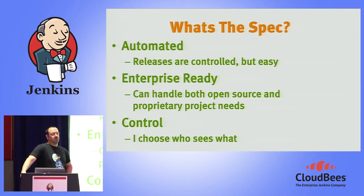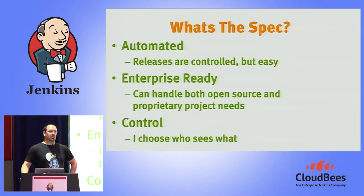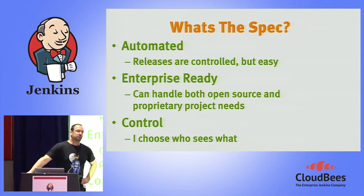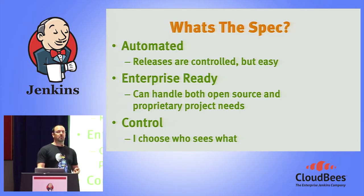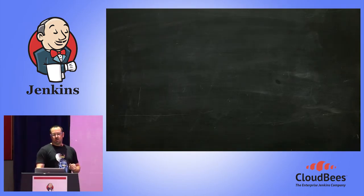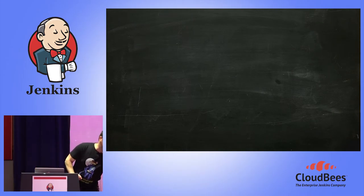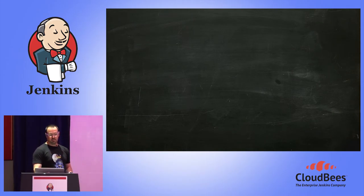The basic specification would be something that is fully automated and easy. We want something that is enterprise-ready — so apart from distributing open source or community libraries, you also want to distribute proprietary software. And of course you have control: privacy, auditing, who has done what and who can see what. If we break it down to steps, we are wishing to do the following.